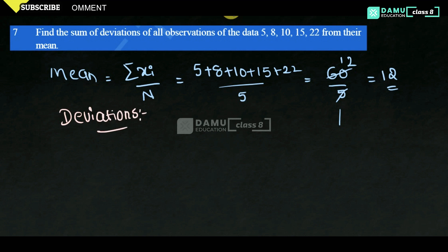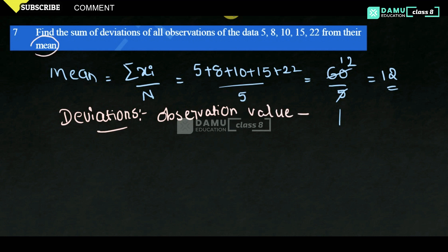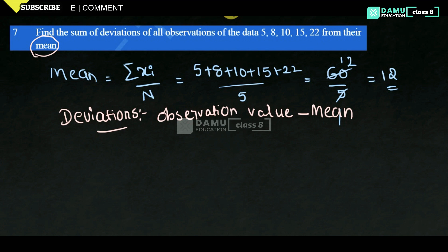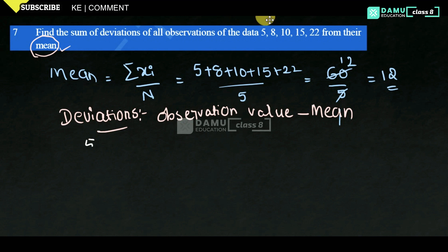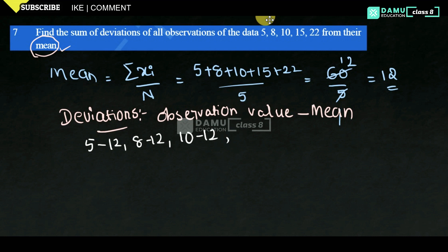Deviations are observation values minus the mean. So the deviation values are: 5 minus 12, 8 minus 12, 10 minus 12, 15 minus 12, 22 minus 12.